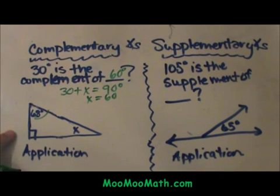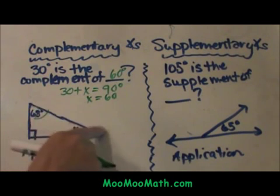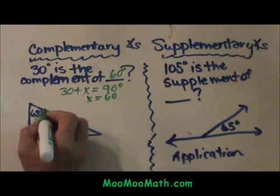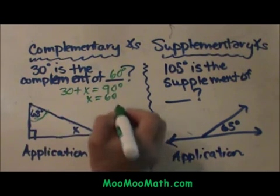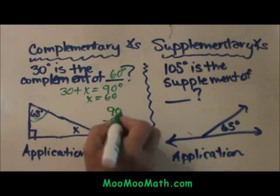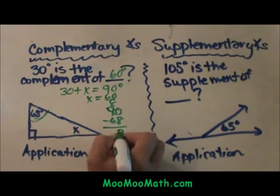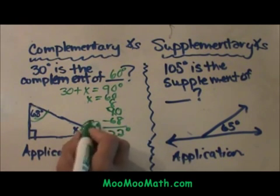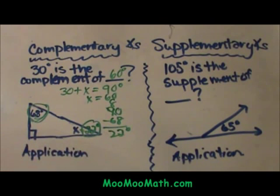Now let's look at an application of complementary. In a right triangle the two acute angles are complementary. So if I know one angle is 68 I can subtract it from 90 and I get 22 degrees. So that makes this angle 22. So 68 and 22 are complements of each other.